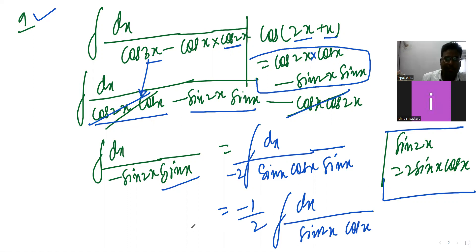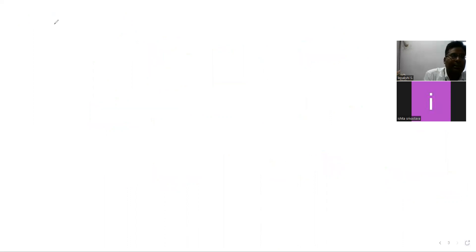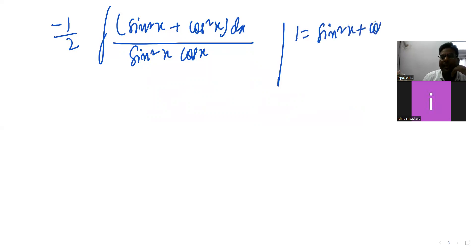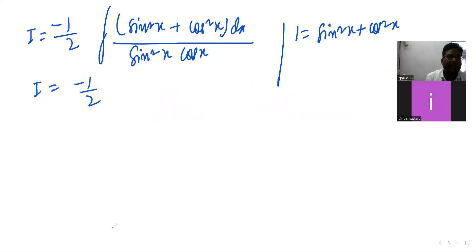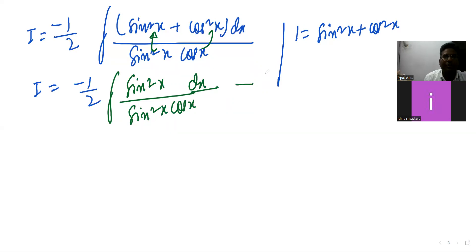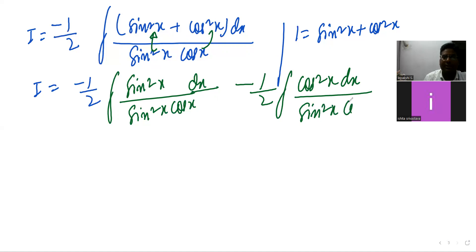Understood up to this point? In the numerator, write sin²x + cos²x instead of 1 (using the Pythagorean identity). So I = minus 1/2, then divide separately: first term gives sin²x upon sin²x·cosx·dx, and second term gives minus 1/2 integration of cos²x·dx upon sin²x·cosx.